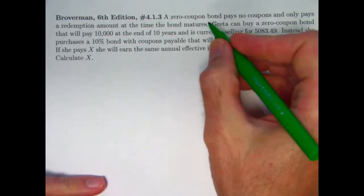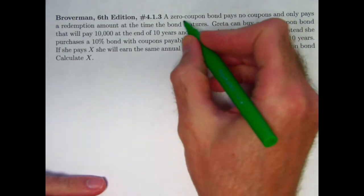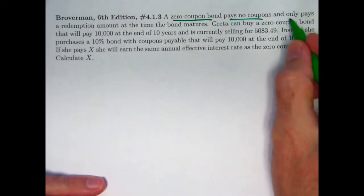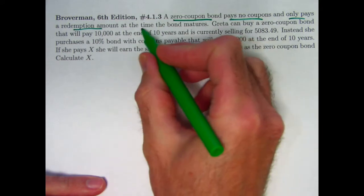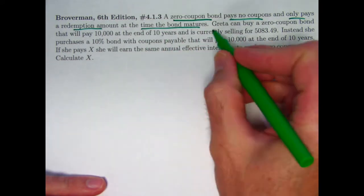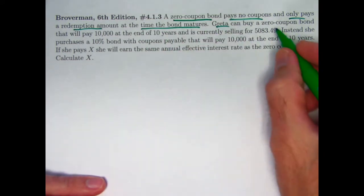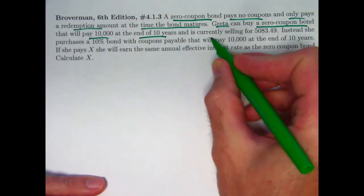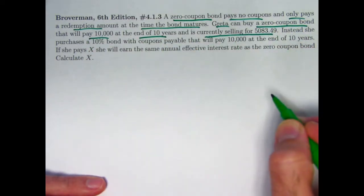In the problem statement, the very first sentence is just a description of what a zero-coupon bond is. A zero-coupon bond pays no coupons, pretty simple. It only pays the redemption amount at the time the bond matures. Greta has two options. She can buy, first of all, a zero-coupon bond that will pay $10,000 at the end of 10 years and is currently selling for $5,083.49.